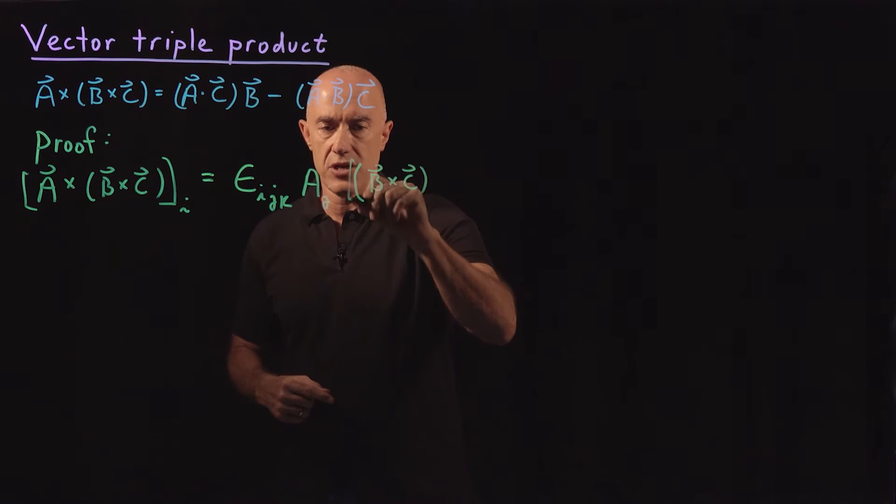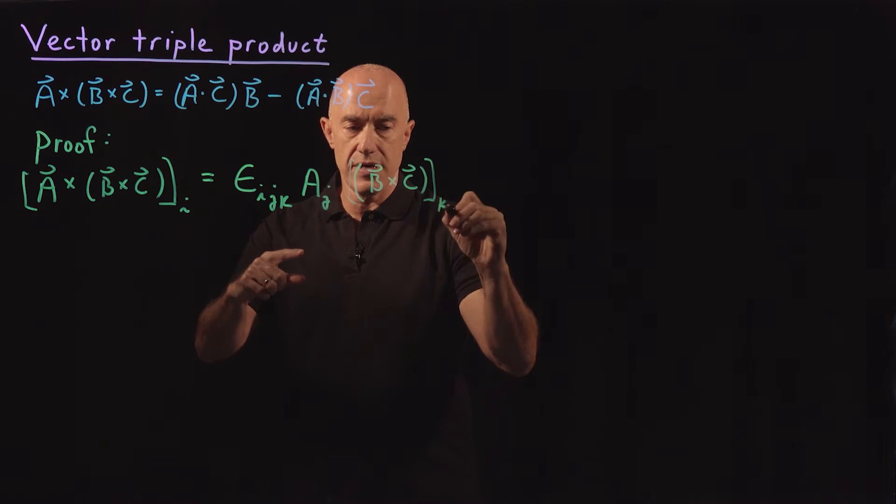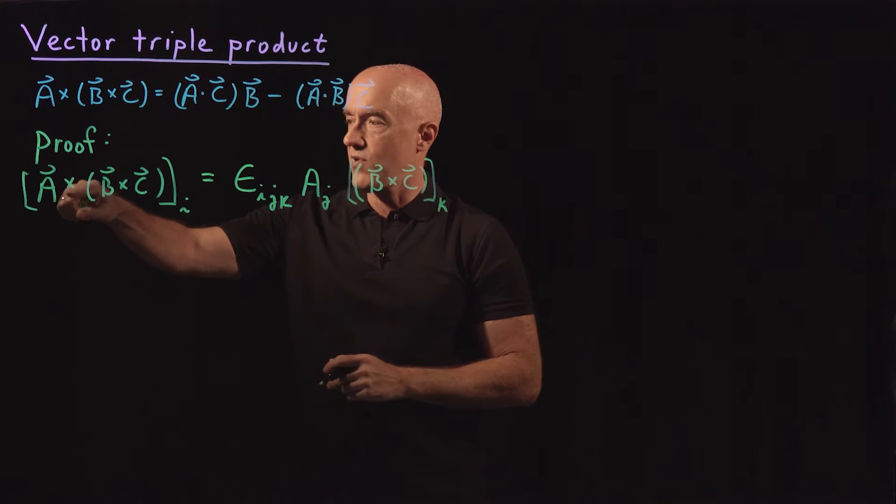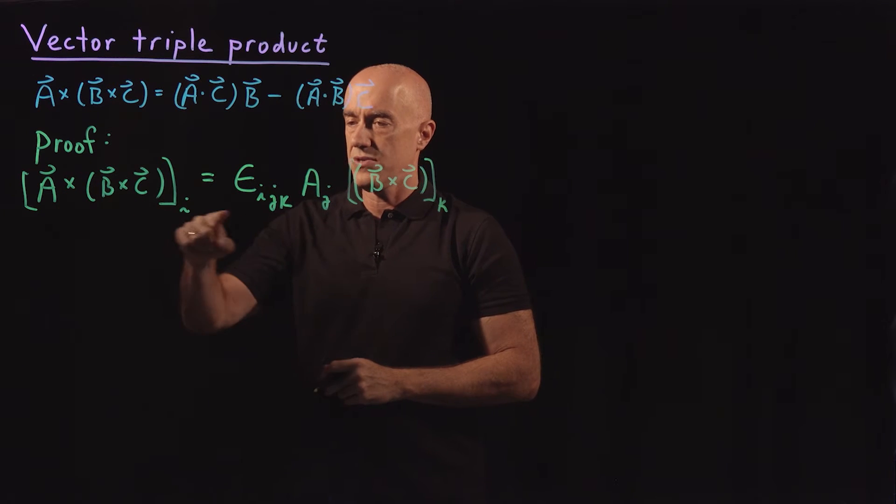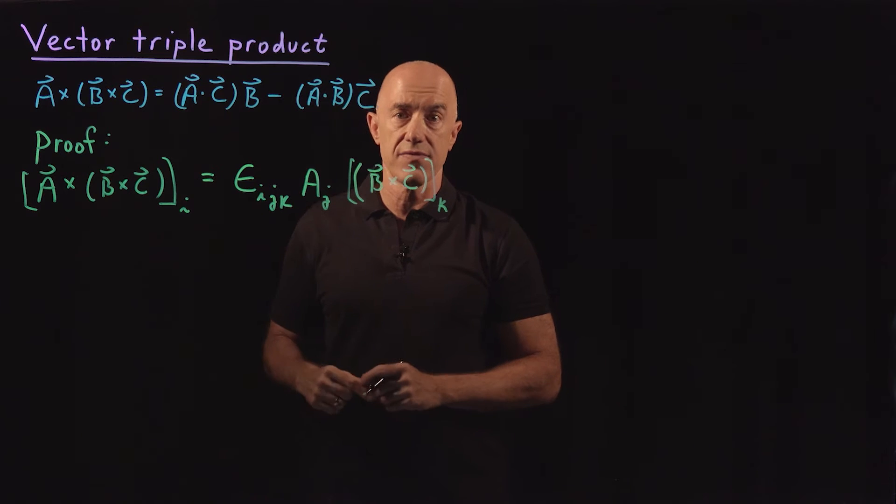So let me write that as (B×C)_k. And we'll consider here the k-th component. So we're writing this first cross product using the Levi-Civita symbol.